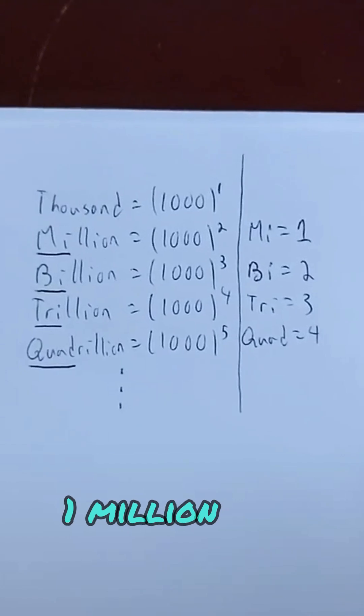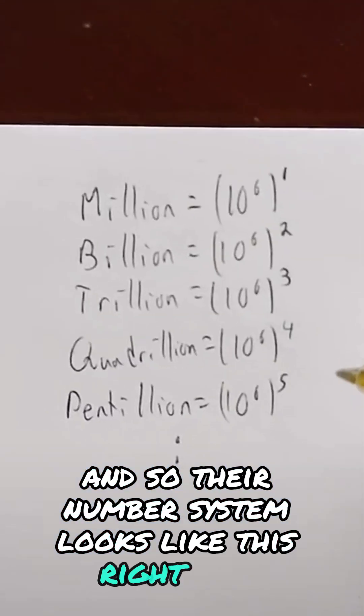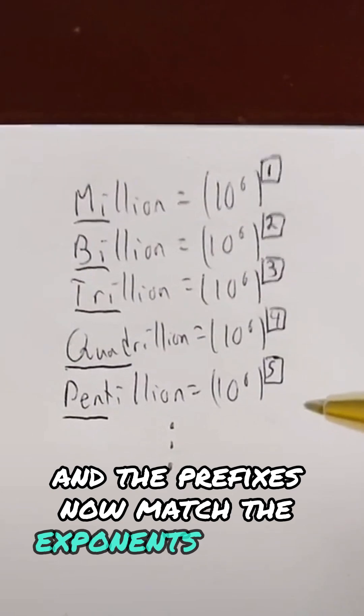Alternatively, in the Old British system, a million was their base, and so their number system looks like this right here. And the prefixes now match the exponents, as they should.